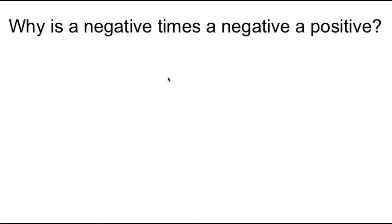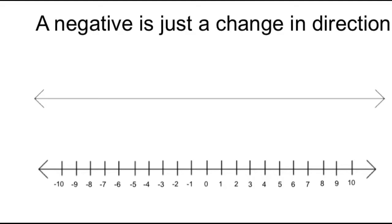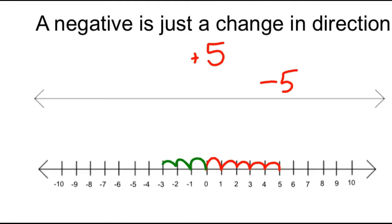The first thing you need to know about a negative is that it is just a change in direction. A positive 5 means we're going to bounce to the right 5 on the number line. A negative 5 would be bouncing to the left 5. So it's just a direction.